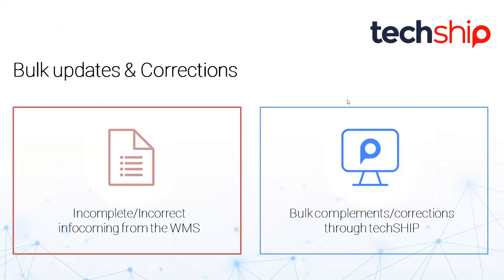Another topic: bulk updates and corrections. These are typically used when you have incomplete or incorrect information coming from the WMS. On TechShip's side, TechShip can complement or correct that information. It's not that you can update every single field, but some key fields can be handled this way. For example, if you want to assign 'signature required' to an entire batch but it's too much work in the WMS, within TechShip you can correct or complement the batch on that missing information in just a couple of clicks.